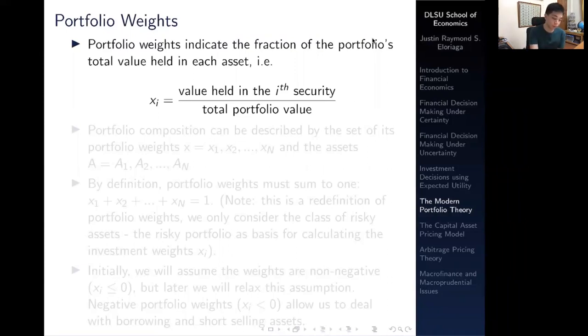For example, say I have a stock portfolio where my stock of wealth inside the portfolio is around 10,000 pesos or 10,000 dollars. If I have 1,000 dollars or 1,000 pesos inside of Apple, its portfolio weight X1, say Apple is the first firm, is going to be 1,000 divided by 10,000, meaning the portfolio weight of Apple is 0.10. And of course, by logic, all the portfolio weights must sum up to 1.